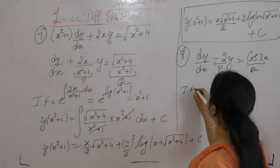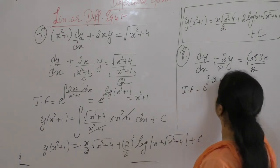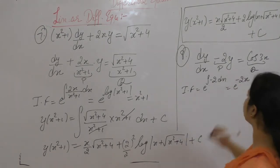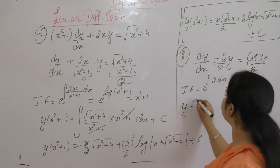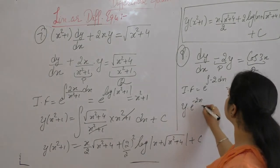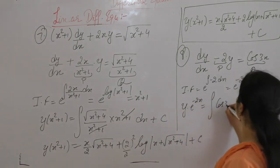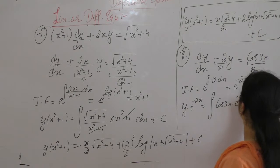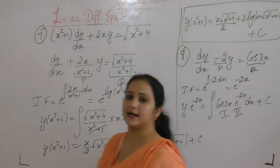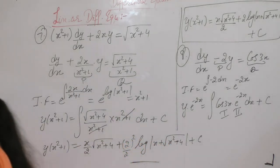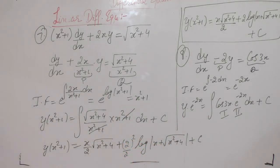The integrating factor is e^(∫P dx). Integral of 1 is x, so the integrating factor is e^(−2x). Now, y into the integrating factor equals integral of Q into integrating factor plus c. We take the trigonometric function as first and exponential function as second, so we will solve by using integration by parts.